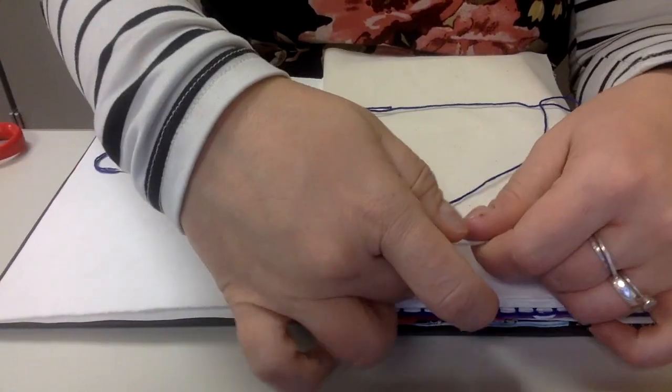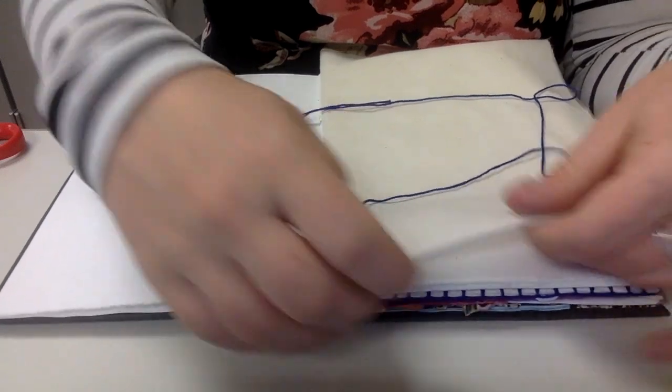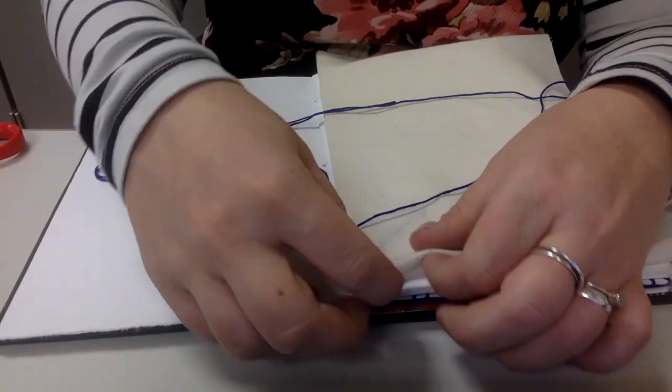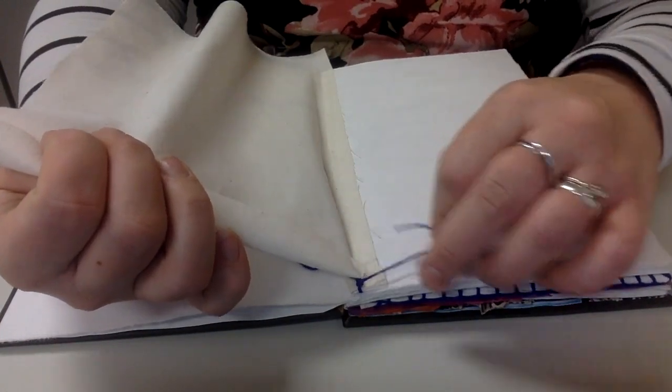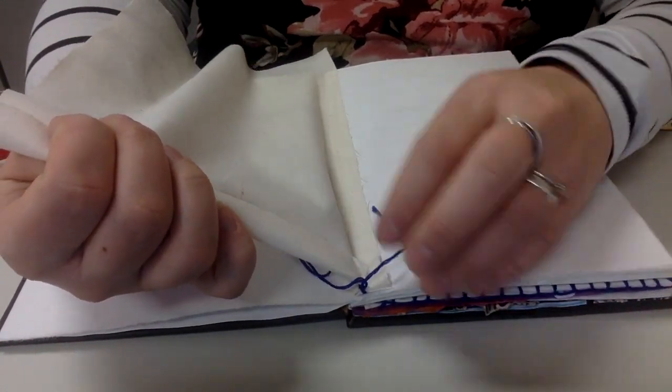Then you might want to trim off a little bit of this edge. I'm just going to go ahead and tuck mine into the space between the fabric and the page. If that's difficult to do, you can kind of lift it up like I'm doing here and just stick that in there.